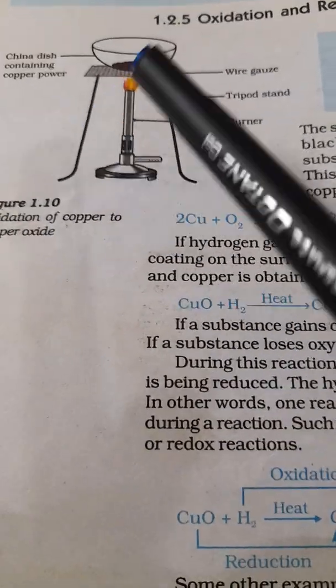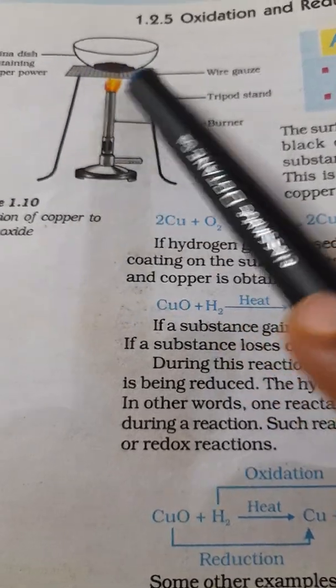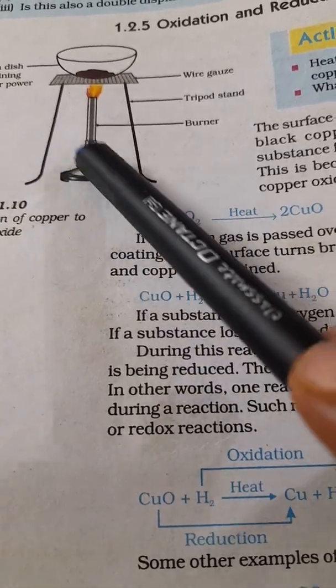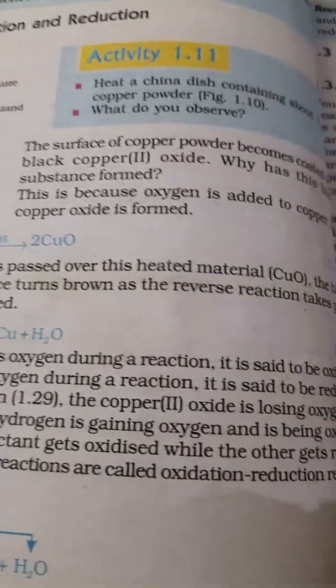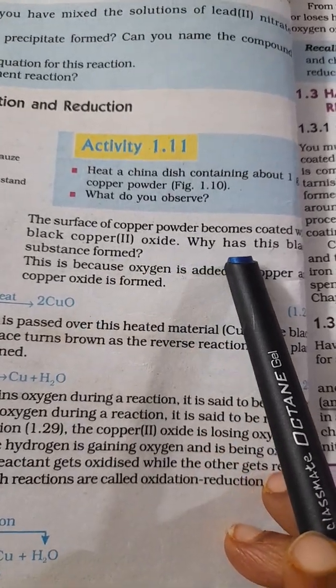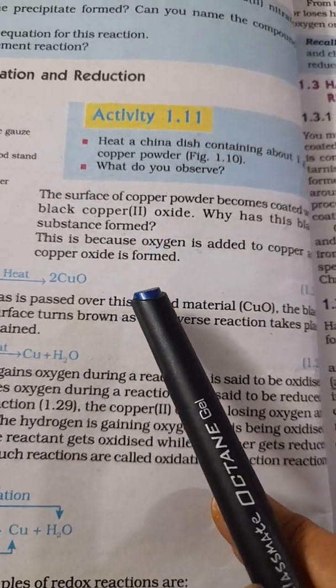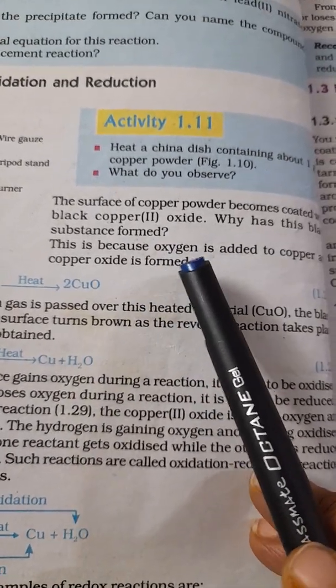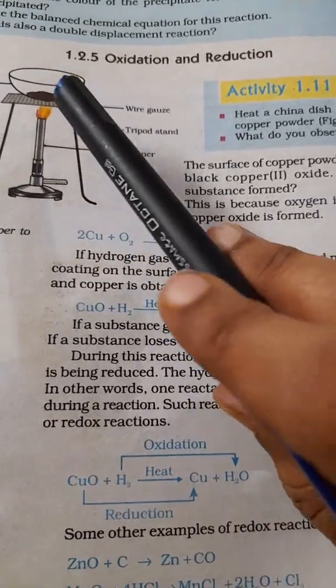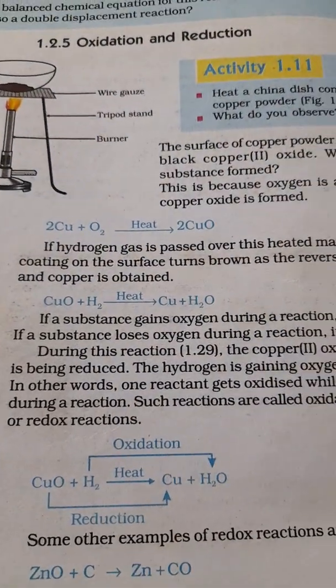You can see the china dish which contains copper powder. This is a wire gauze, just a wire mesh net-like thing, and this is a tripod. Tripod means three-leg stand and this is a burner. When you heat it you can see that the surface of copper powder becomes coated with black copper oxide. What is this black substance formed? Why is this formed? Because oxygen combines with copper to form copper oxide when you heat it. Copper is there, when you heat it oxygen will mix with copper and form copper oxide.